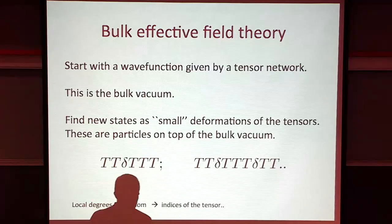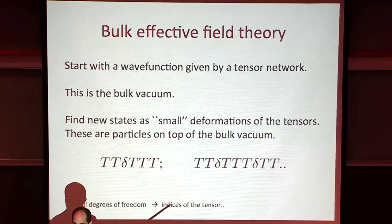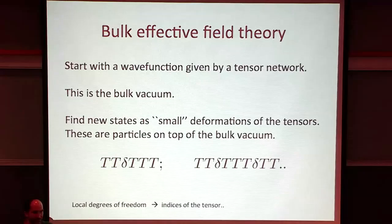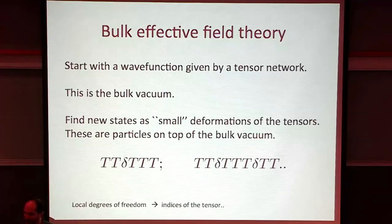The idea is that we start with a given tensor network corresponding to the bulk vacuum or bulk state from which we build our perturbation theory. We then find new states which are small deformations of the tensor. We locally change one of these tensors a little bit, and that would be a localized excitation in the bulk. But localized in the bulk just means localized in this space of tensors - there's no sense in which they are necessarily localized on the boundary.